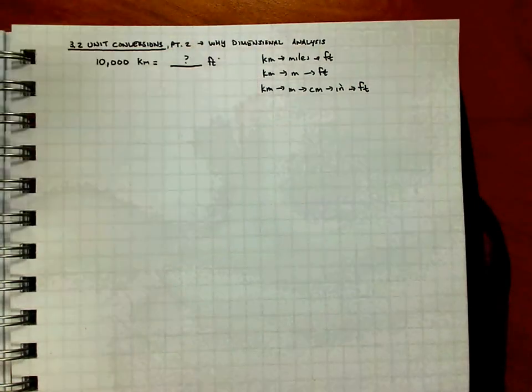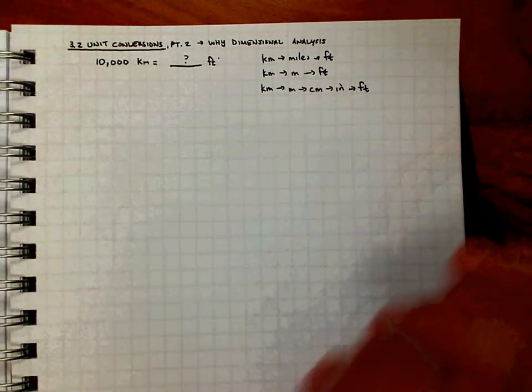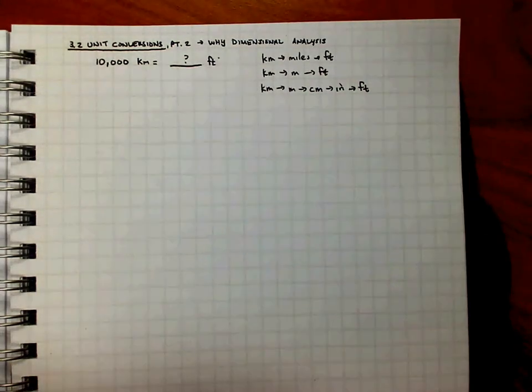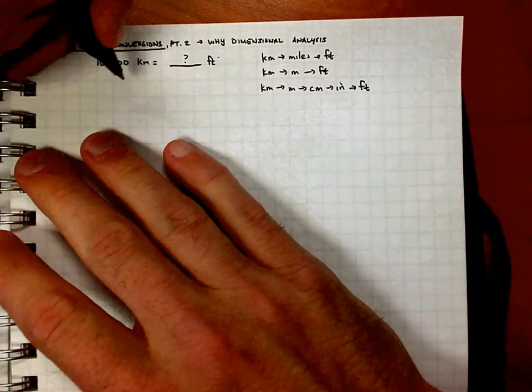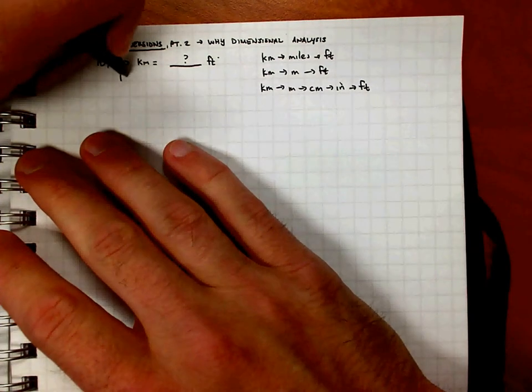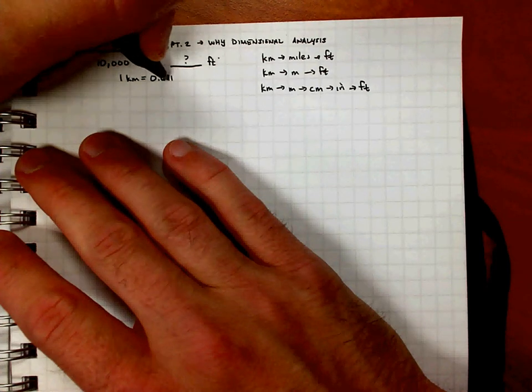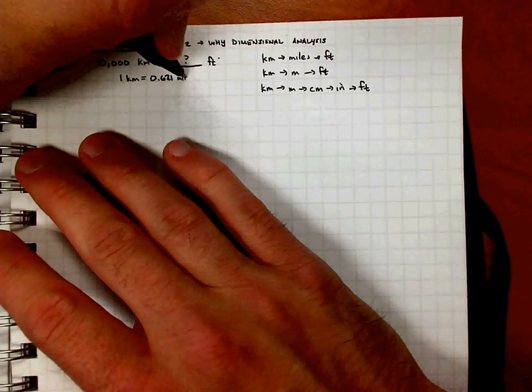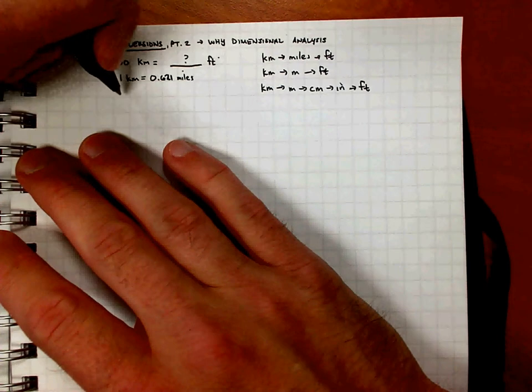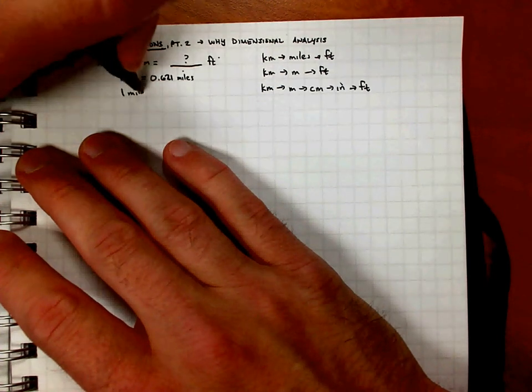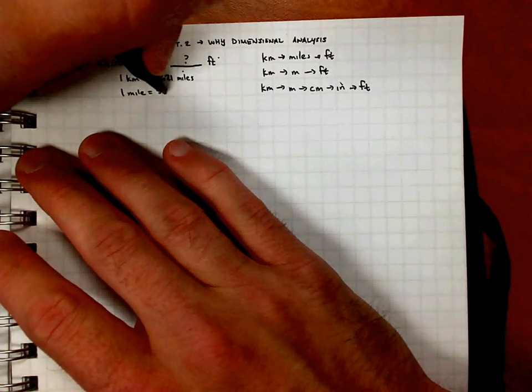So what can we do? Instead, let's use dimensional analysis in this approach. Here's what I know. I'm going to start off by writing out what I know. For instance, one kilometer is equivalent to 0.621 miles. I know that.